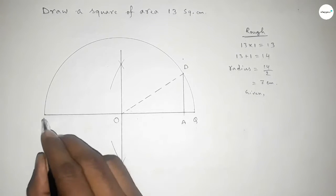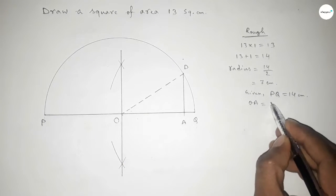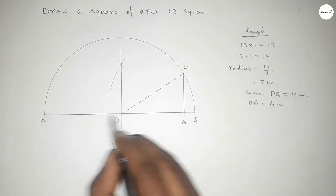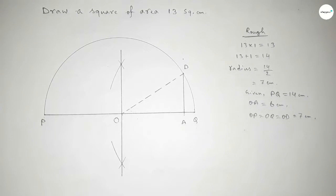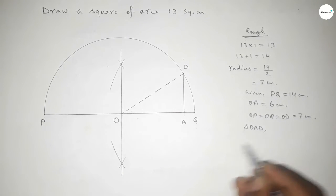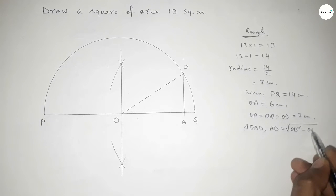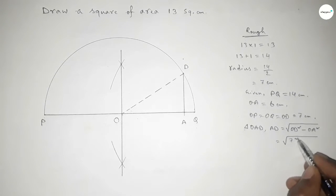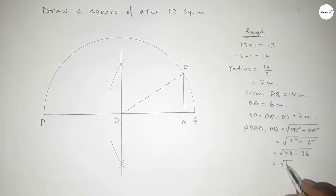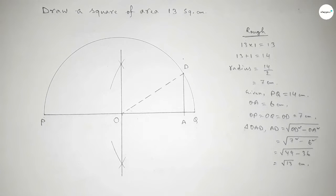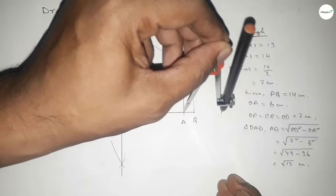Given: PQ = 14 cm, OA = 6 cm, and radii OP = OQ = OD = 7 cm. From right-angle triangle OAD, AD = √(OD² − OA²) = √(49 − 36) = √13 centimeters. So AD = √13 centimeters.